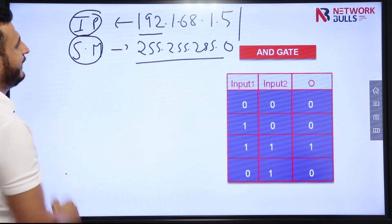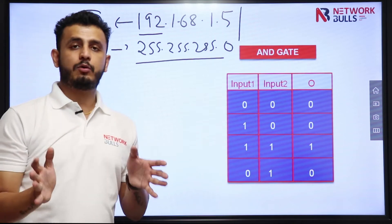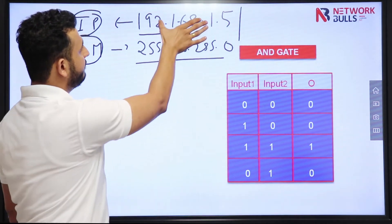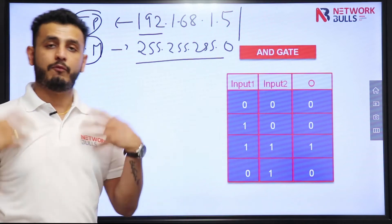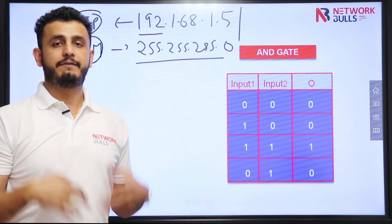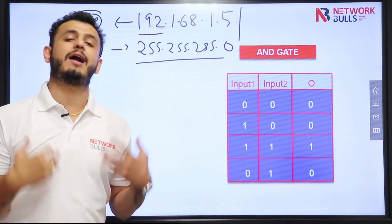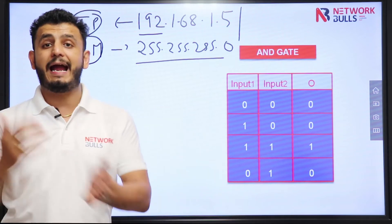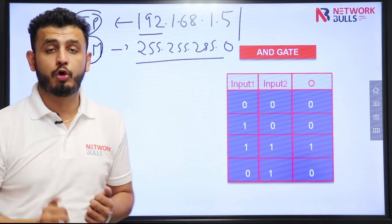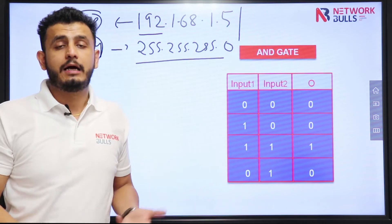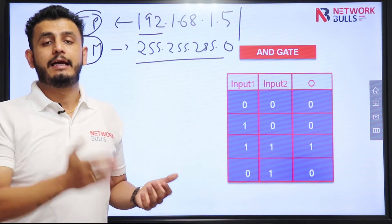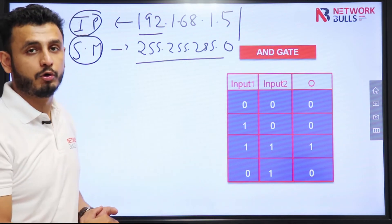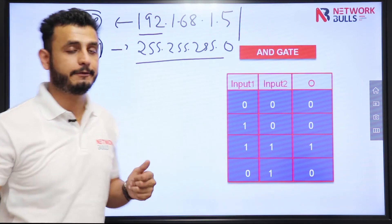So, again I am telling — we will be calculating network ID, meaning from which IP this particular network will start, and we will also calculate broadcast ID, meaning at which IP this network will end. This way we will be able to calculate how many users will exist in this network. Let's start from network ID.